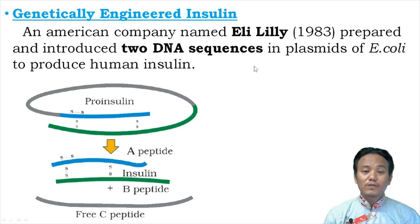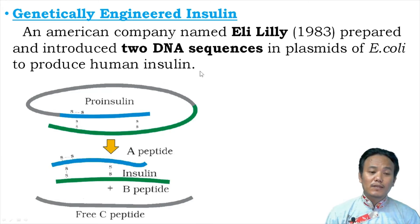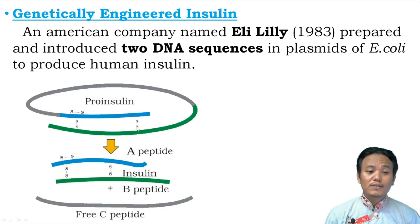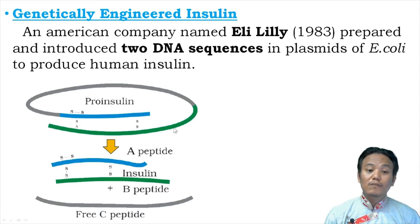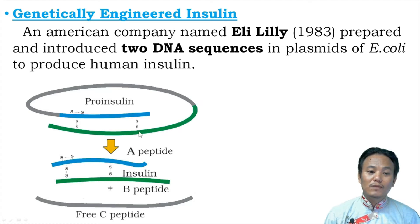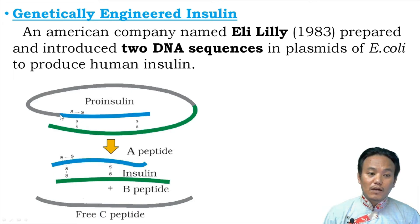You may ask why two DNA sequences are needed. In a normal human being, the pancreatic cells first produce insulin in the form of pro-insulin — it is not a functional protein yet. That protein has to undergo some modification to become mature functional human insulin. Inside pro-insulin there are three peptide chains: the A peptide chain, the C peptide chain, and the B peptide chain.